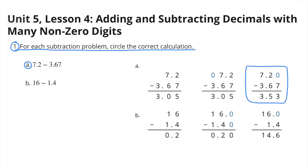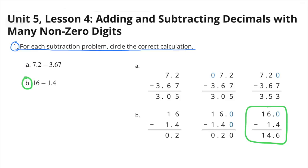A. 7 and 2 tenths, or 7 and 20 hundredths, minus 3 and 67 hundredths equals 3 and 53 hundredths. B. 16 minus 1 and 4 tenths equals 14 and 6 tenths.